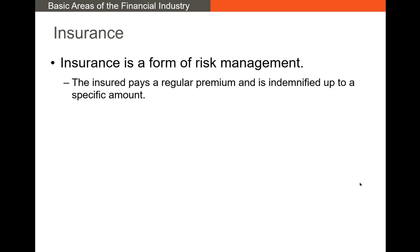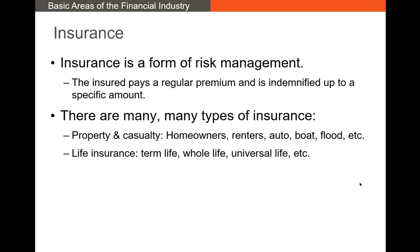Now let's talk about the insurance industry. Insurance is a form of risk management — the insured pays a regular premium, maybe monthly or semi-annually, and the insurance company indemnifies the insured up to a certain amount. For example, if you want coverage up to $10,000 in case of an accident you caused, you'd get property and casualty or auto insurance. We typically break insurance into broad categories: P&C or property and casualty, which includes homeowners, renters, auto, boat, and flood insurance — basically anything covering damage to a piece of property.